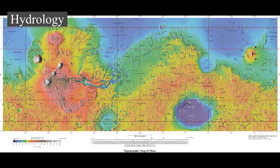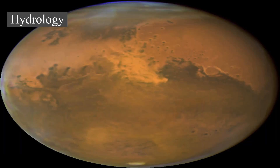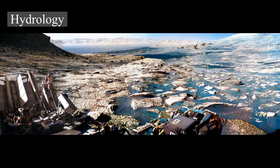Other geological features such as deltas and alluvial fans preserved in craters are further evidence for warmer, wetter conditions at intervals in earlier Mars history. Such conditions necessarily require the widespread presence of crater lakes, for which there is independent mineralogical, sedimentological, and geomorphological evidence. Further evidence that liquid water once existed on the surface of Mars comes from the detection of specific minerals such as hematite and goethite, both of which sometimes form in the presence of water.